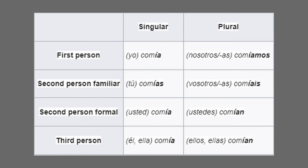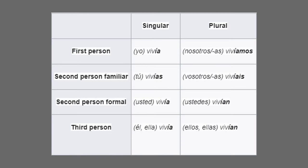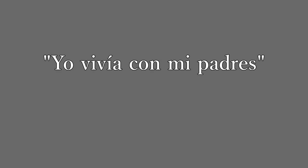Using the verb comer in the imperfect: yo comía (I was eating), tú comías (you were eating), usted comía (you were eating formally), él/ella comía (he/she was eating), nosotros comíamos (we were eating), vosotros comíais (you all were eating), ustedes comían (you all were eating), ellos/ellas comían (they were eating). Example: yo comía antes de escuela — I was eating before school. Using vivir: yo vivía (I was living), tú vivías (you were living), usted vivía (you were living formally), él/ella vivía (he/she was living), nosotros vivíamos (we were living), vosotros vivíais (you all were living), ustedes vivían (you all were living), ellos/ellas vivían (they were living). Example: yo vivía con mis padres — I lived with my parents.